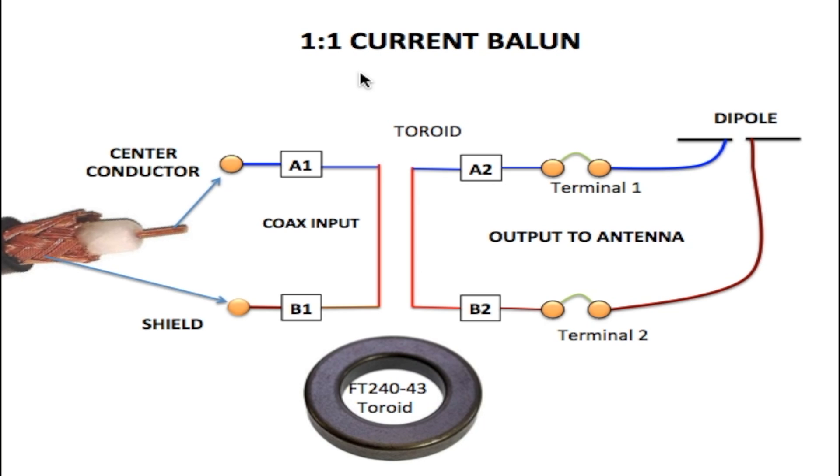We're going to talk about how the one-to-one current balun is designed. Starting at the beginning with the coaxial cable, the middle conductor of the coaxial cable is connected to A1 and the shield is connected to B1.